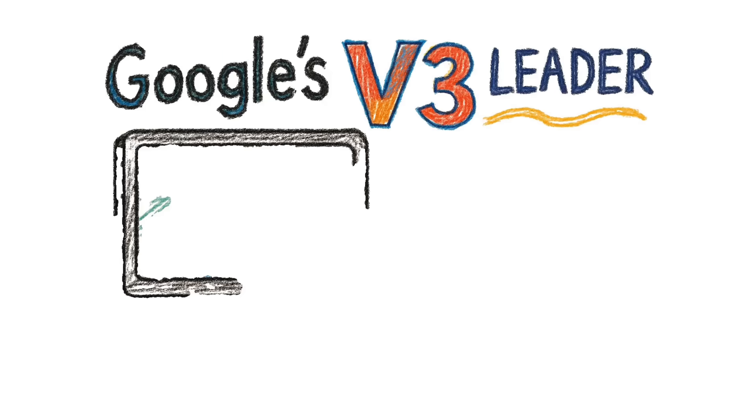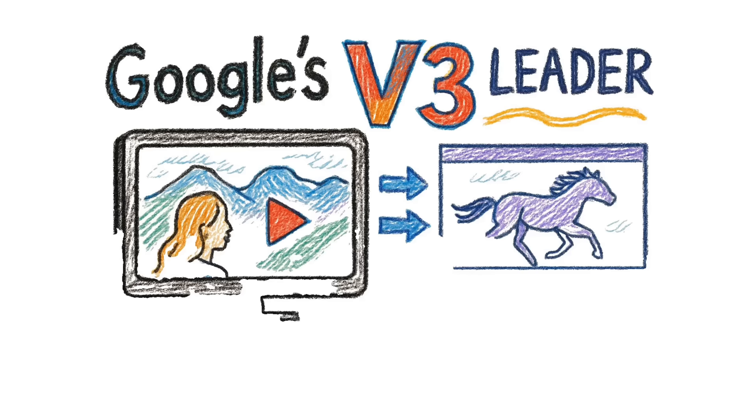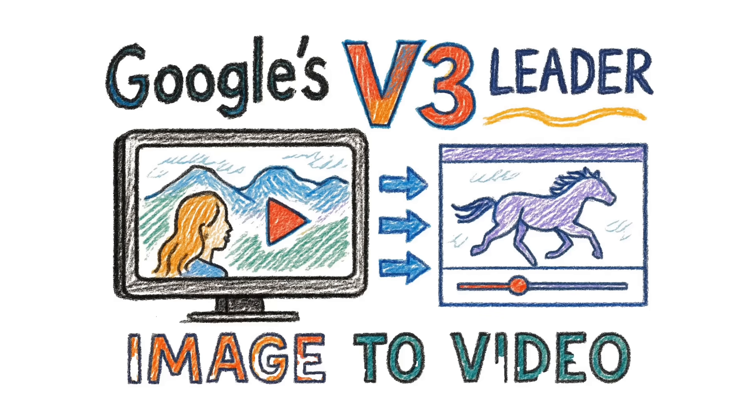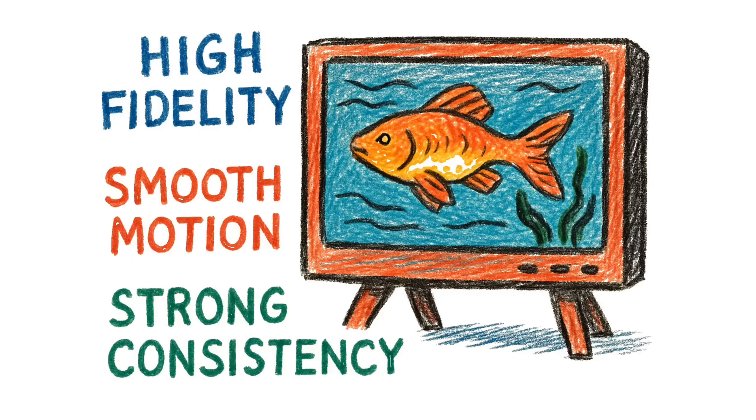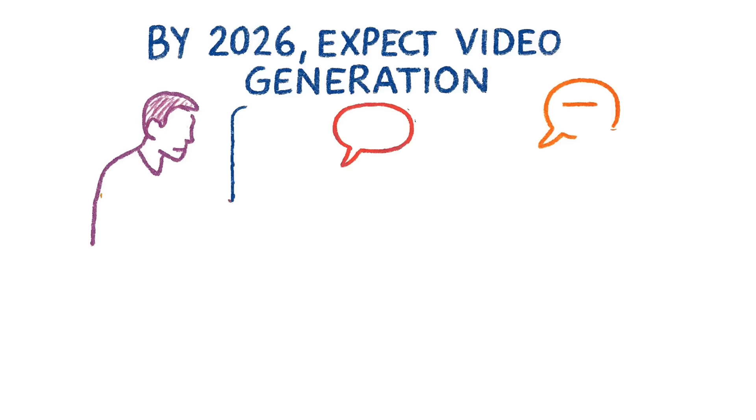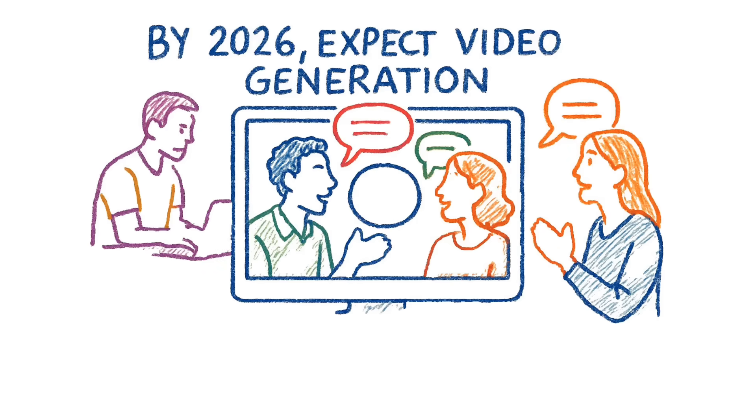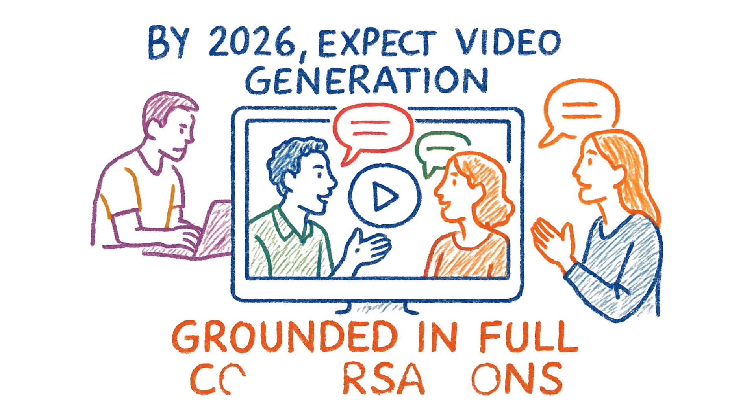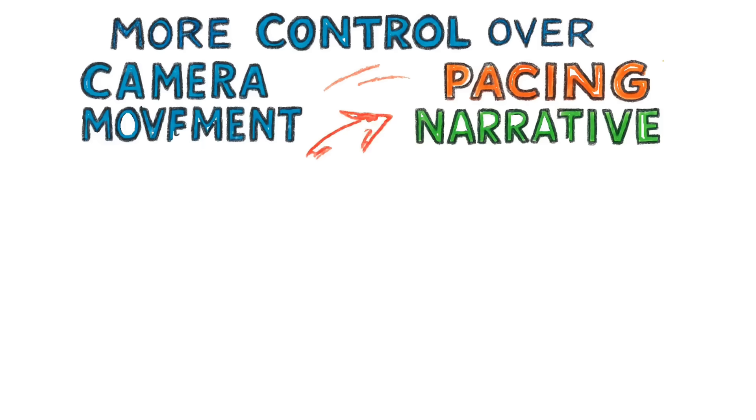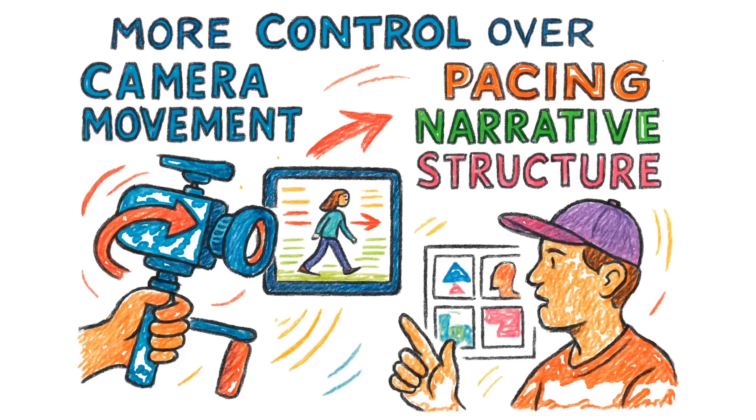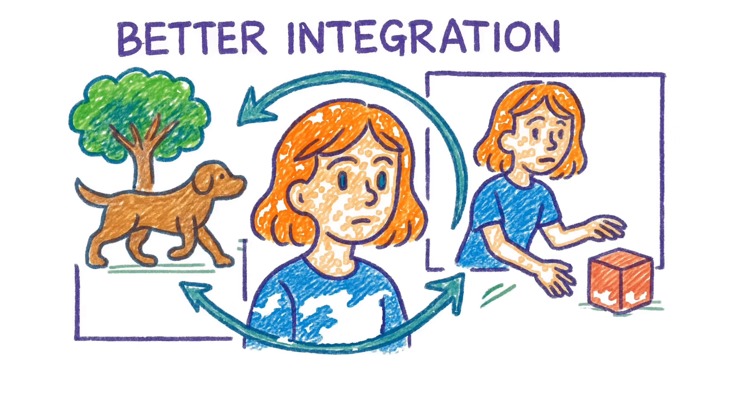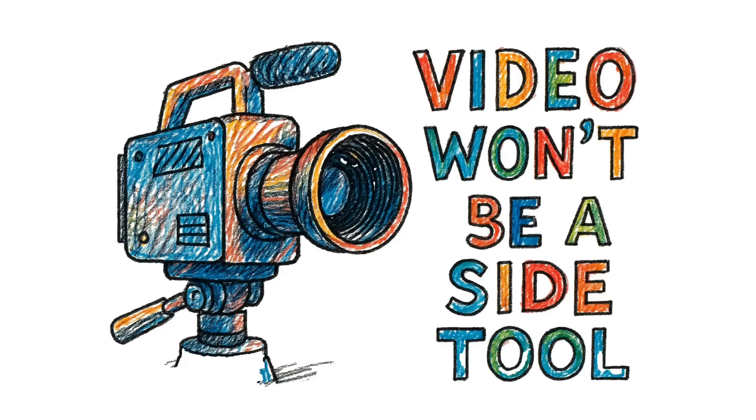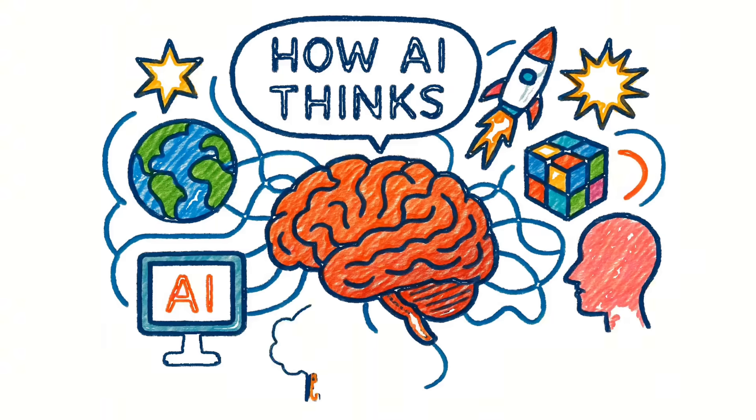And on the video side, Google's V3 model is already being called pretty much the leader in image-to-video generation. High fidelity, smooth motion, strong consistency. By 2026, expect video generation grounded in full conversations, not just single prompts. More control over camera movement, pacing, narrative structure. And better integration with world models, so characters and objects behave consistently across multiple clips. In other words, video won't be a side tool. It'll be how AI thinks.